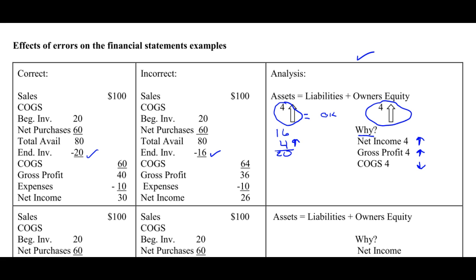Now, let's check to see. I'm saying, first of all, that net income should have been $4 more. And you can see by my income statement that it should have been $4 more. You can also see that gross profit should have been $4 more, and in fact it should have been $4 more.